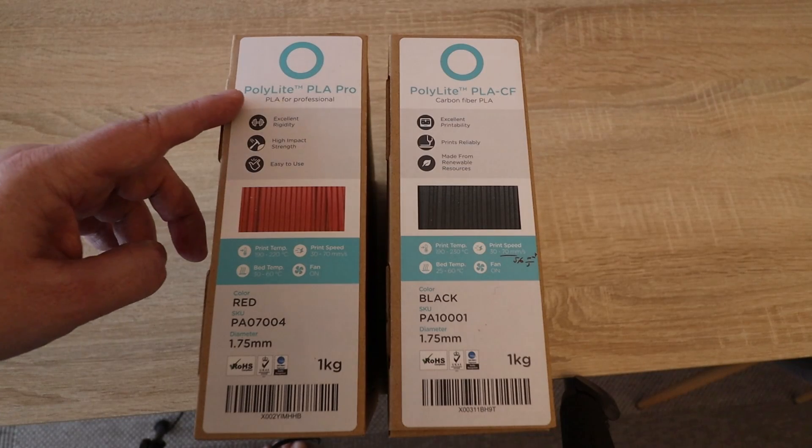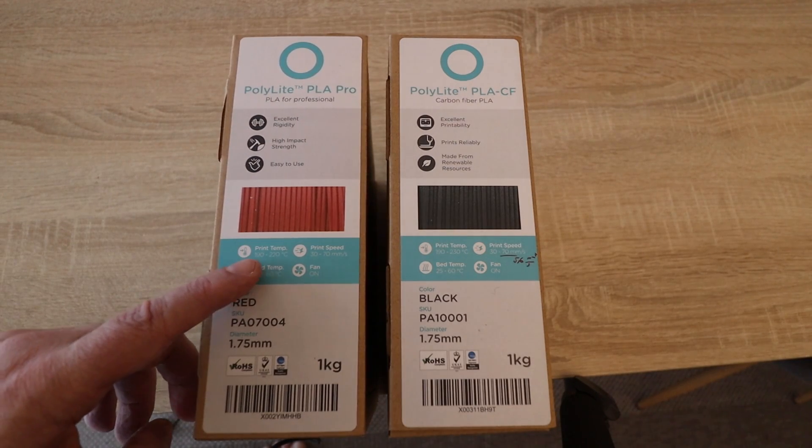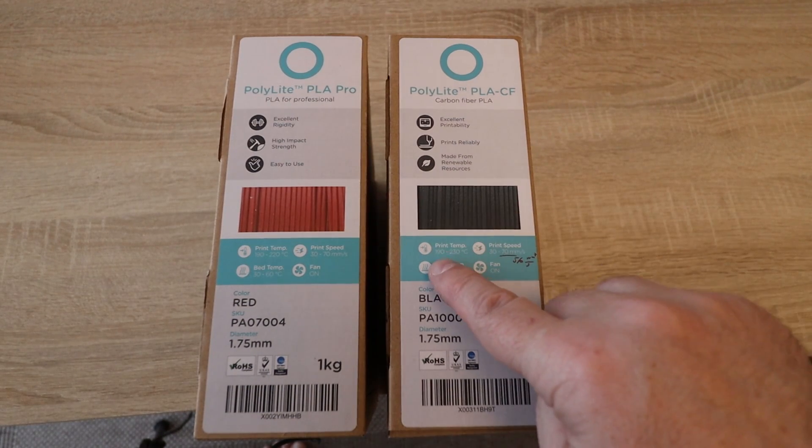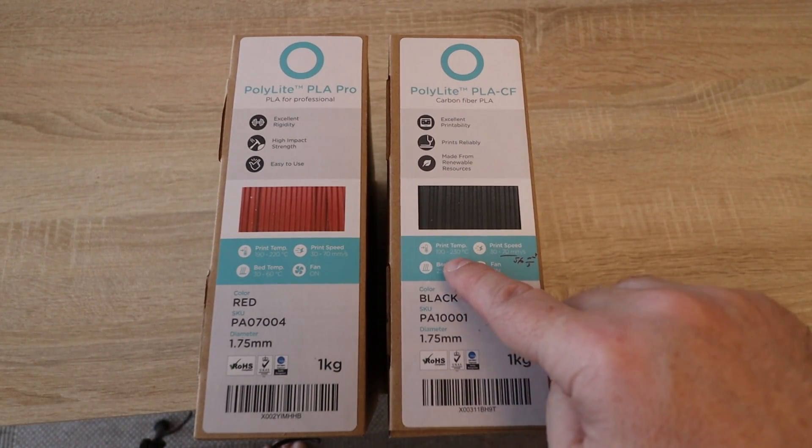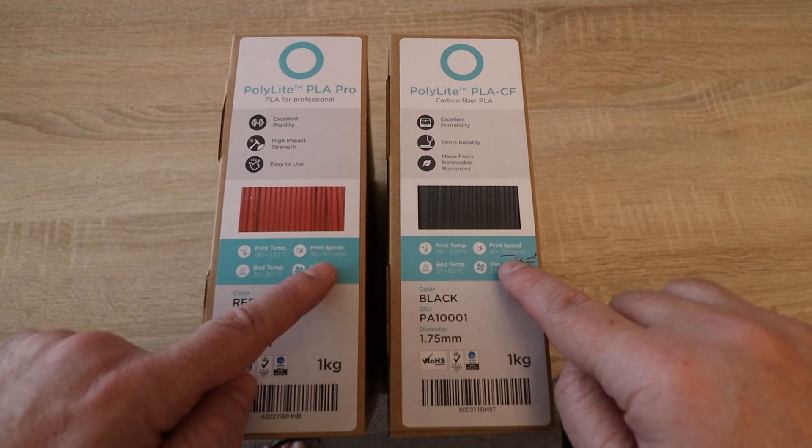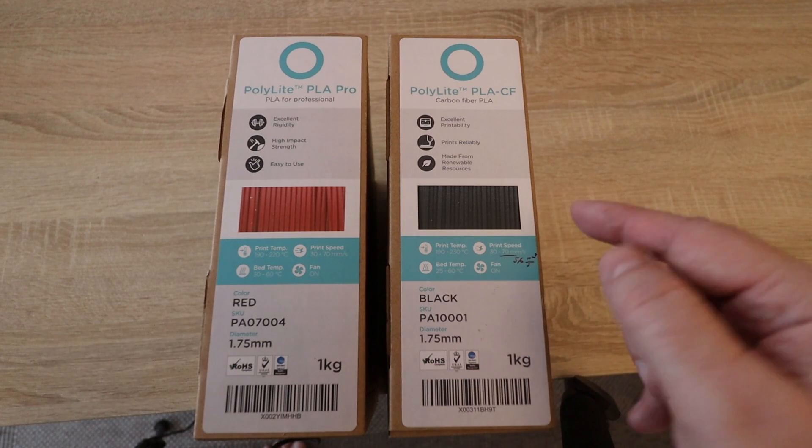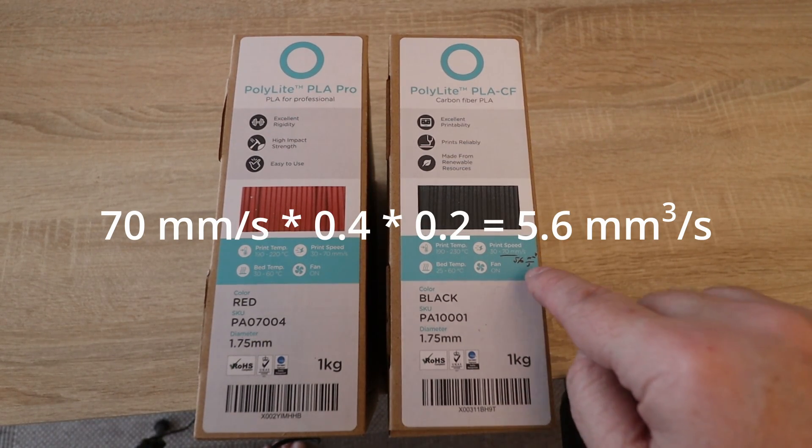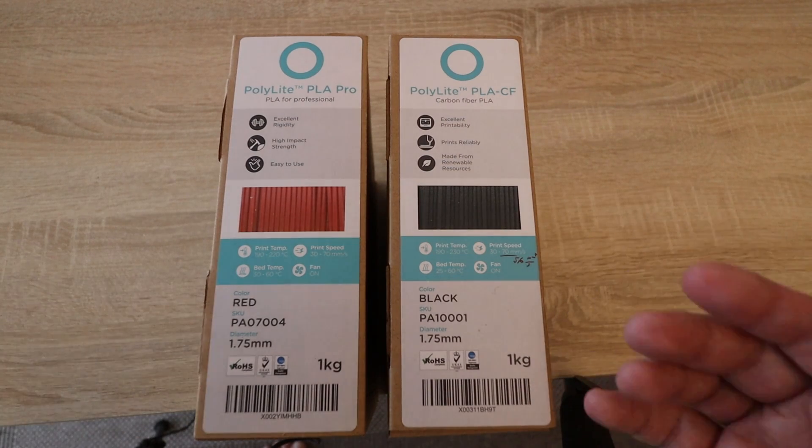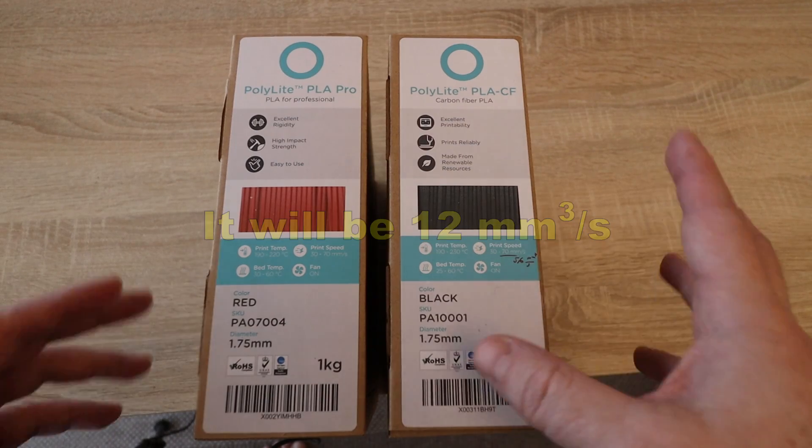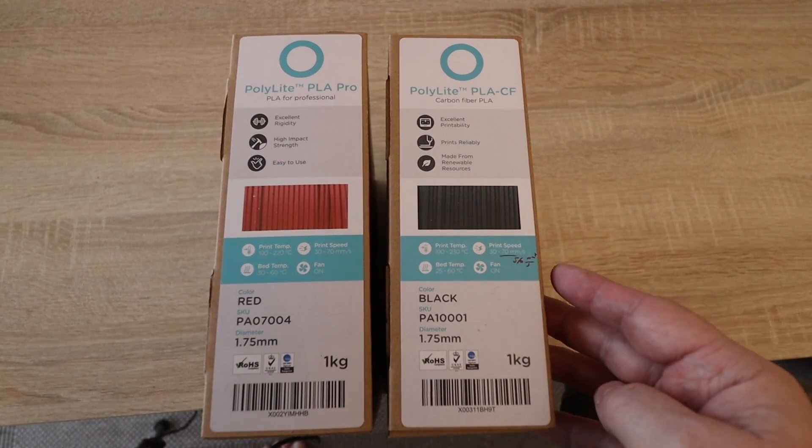The PLA Pro is in red color, print temperature between 190 and 220 degrees Celsius. The carbon fiber is black and print temperature between 190 and 230 degrees Celsius. In both cases the maximum recommended print speed is 70 millimeters per second, and I calculate this means 5.6 cubic millimeters per second is the max flow rate, which is quite low. I think I will try this on 10 cubic millimeters per second. Everything will be printed on X1 Carbon Bambu Lab printer.